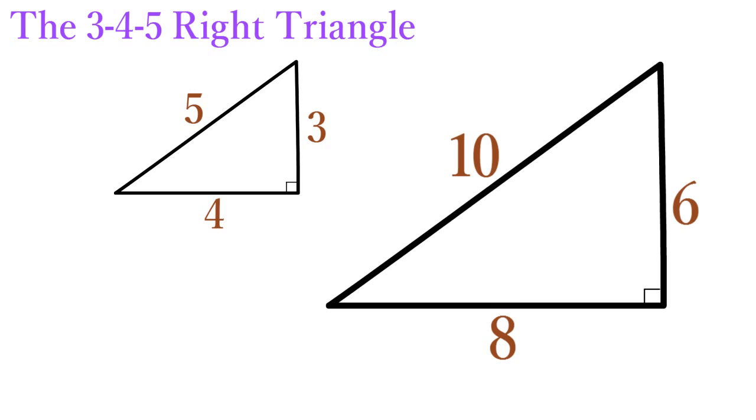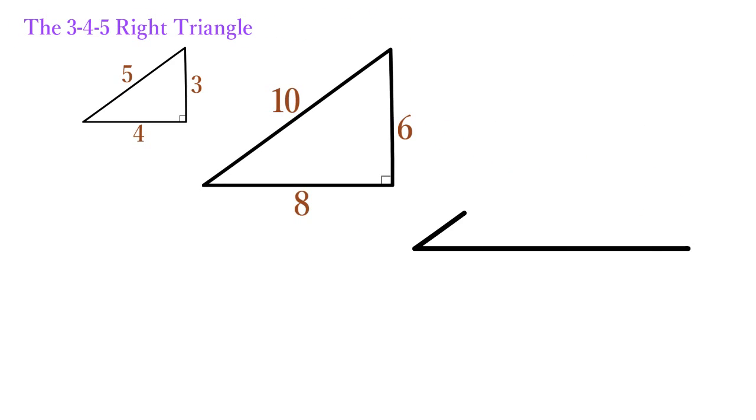Similarly, you can also triple the size of the 3-4-5 Right Triangle, increasing its legs to 9 and 12, and its hypotenuse to 15.